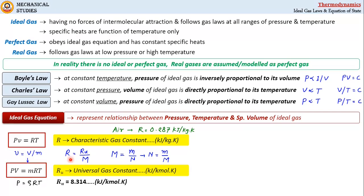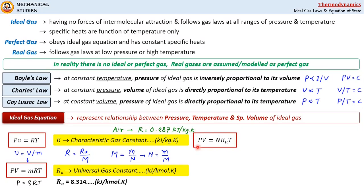If we substitute the characteristic gas constant as Ru/M into the equation pV = mRT, then R becomes Ru/M, and mass divided by molar mass becomes number of moles. Making this substitution, we get a new form of the ideal gas equation: pV = NRuT, where N is number of moles and Ru is the universal gas constant.